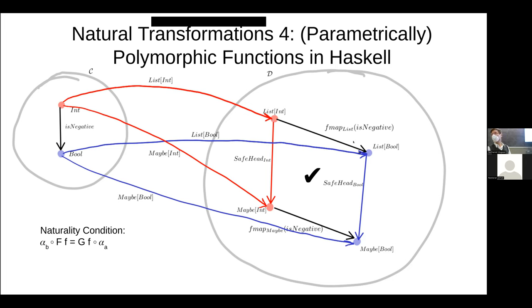How does lifting a function that goes from int to bool now go from list int to list of bool? The list of bool is the same size as the list int — it has to be. The answer is: every element of the list int, you check is_negative or not. That's the lifted value of this function. That's how this functor works — it lifts it by applying the function to every element.